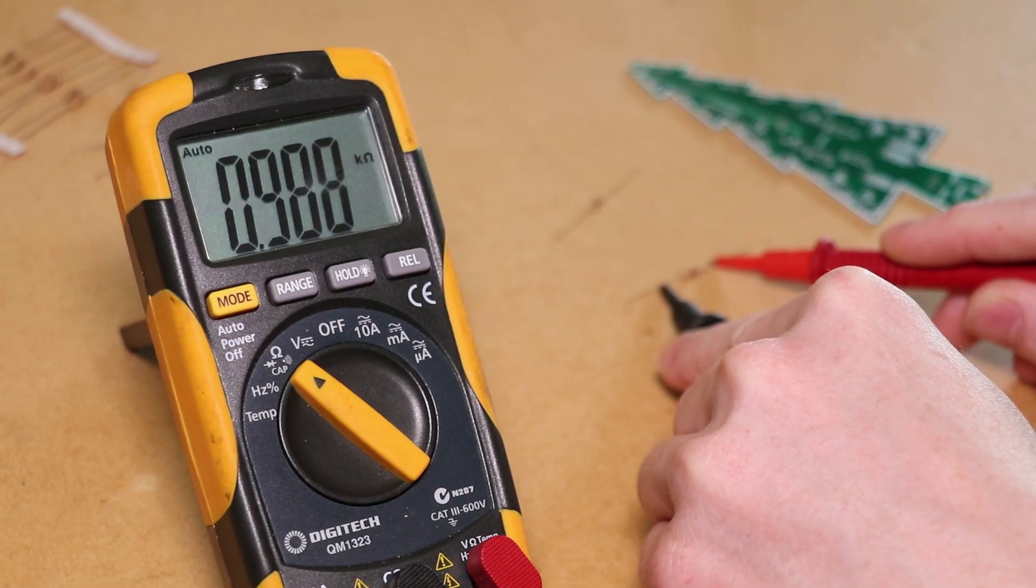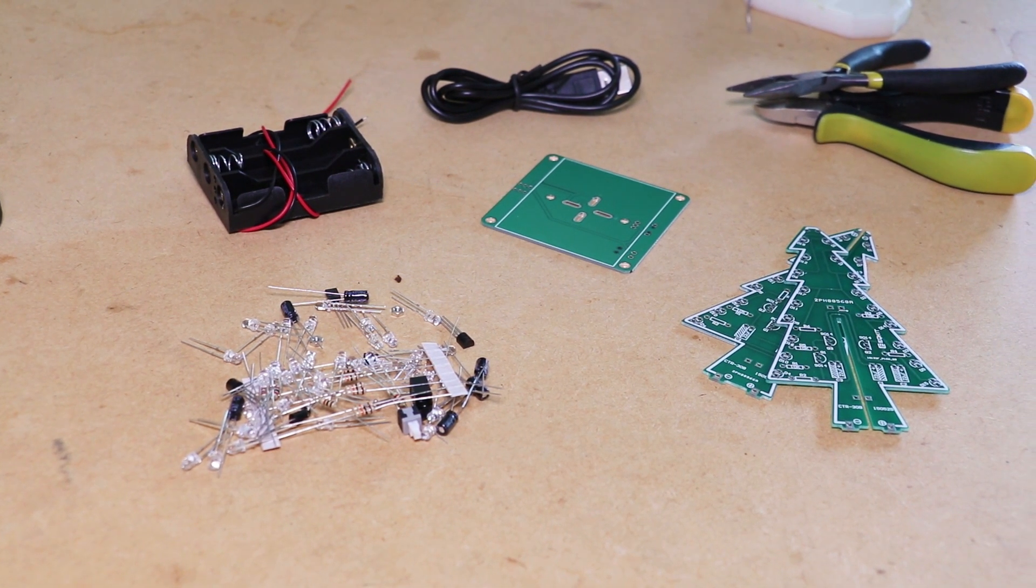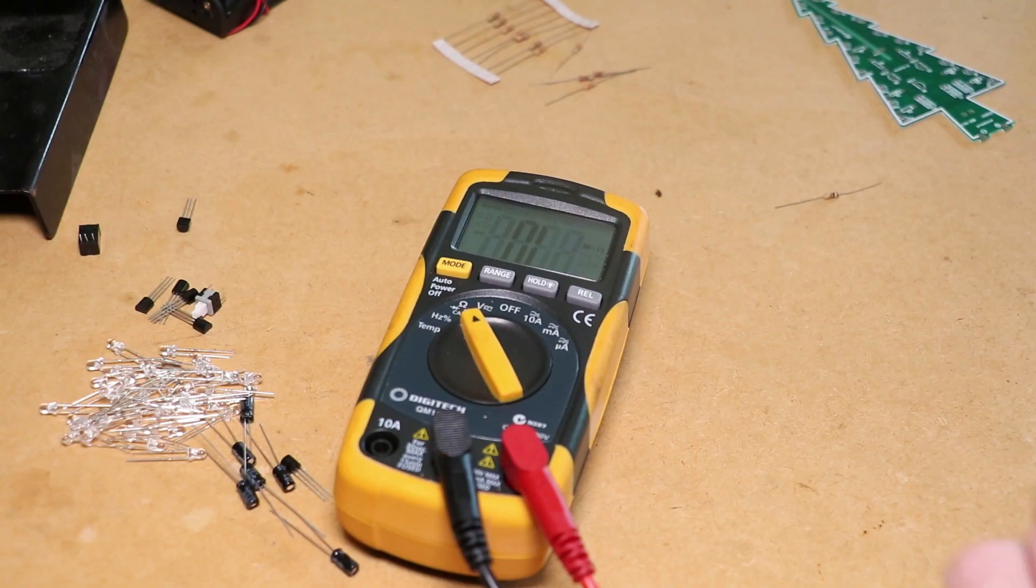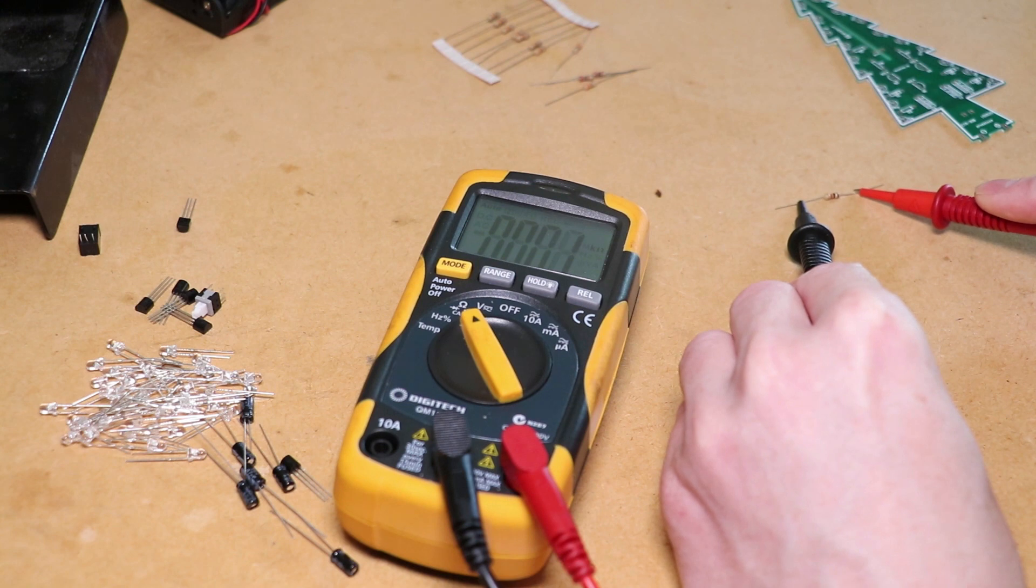To assemble this kit I'll be using a multimeter, side cutters, pliers and a soldering iron along with some solder. To get started I soldered the resistors to one of the halves of the tree, using a multimeter to identify the values of each resistor.